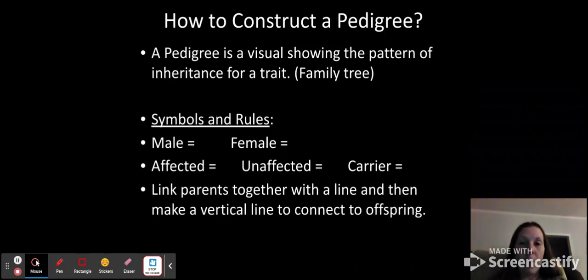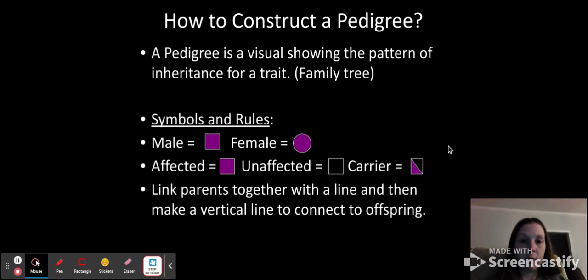How to construct a pedigree. So these are visual showings of patterns of inheritance for a trait. We know our symbols here. And then you link parents together with a line and then vertical line to connect them to offspring.